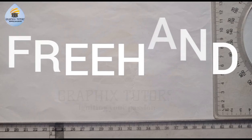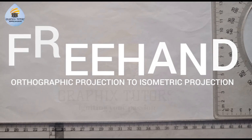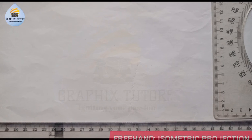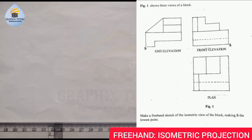In this video we want to solve the problem displayed on the right hand side of the screen. The question says figure 3 shows three views of a block — make a freehand sketch of the isometric view of the block, marking X as the lowest point. We have three given views: the front elevation, the plan, and the end elevation. This is first angle projection.